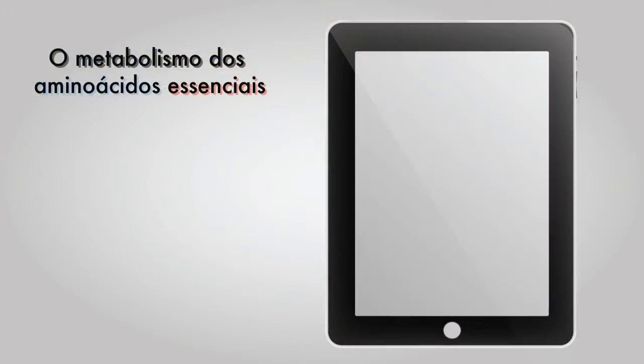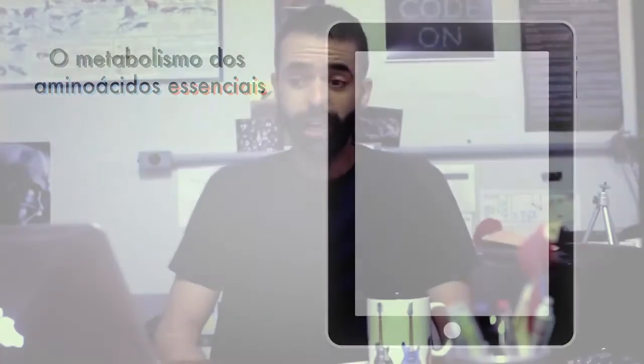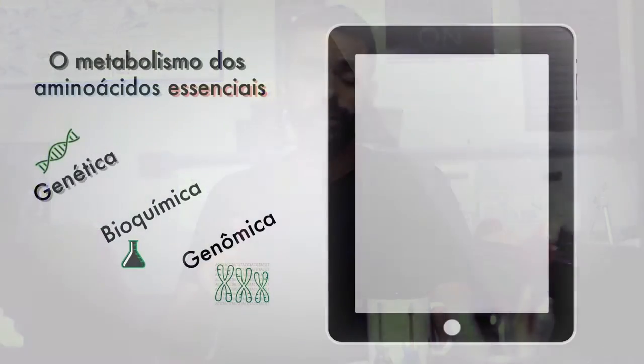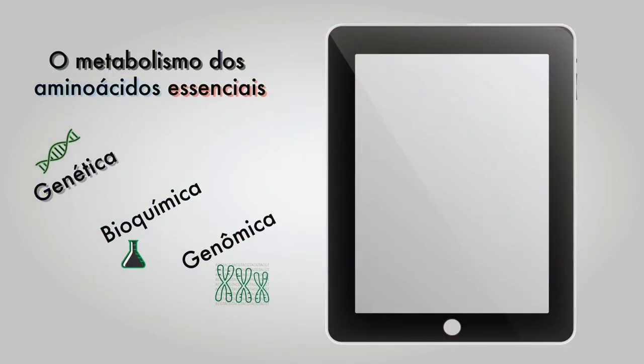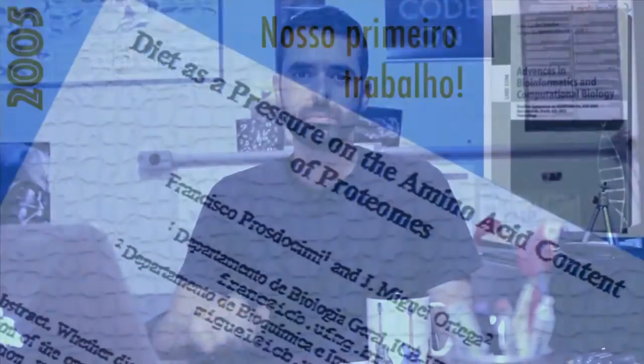Hoje a gente vai falar sobre uma linha de pesquisa do nosso laboratório, o LAMPAN, onde a gente estuda o metabolismo dos aminoácidos essenciais. Para falar sobre isso, a gente vai ter que estudar um pouco de genética, bioquímica e genômica.